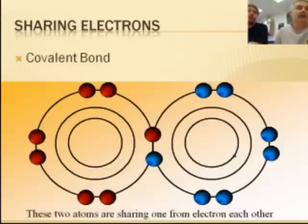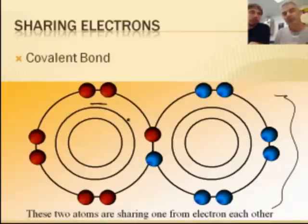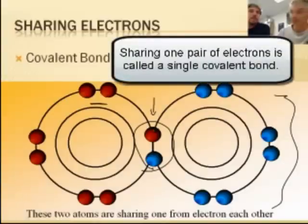So in a covalent bond, here we have two atoms and they're sharing. The blue atom on the right has seven valence electrons — and the atom with the red valence electrons, they aren't really colored, that's just for illustrative purposes. They're sharing these two electrons, so they each have eight. This would be called a single covalent bond because they're sharing one pair. A pair is two electrons.